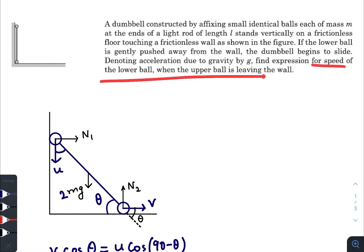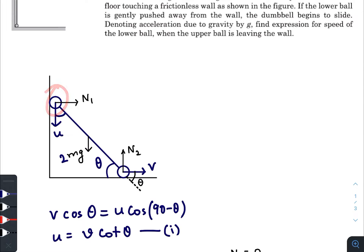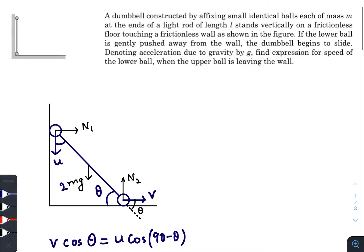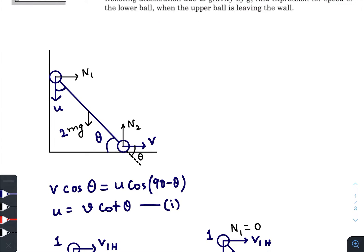We need to find the speed of the lower ball when the upper ball just leaves the wall. Until it leaves the wall, I have drawn the situation and the free body diagram of the structure. The forces acting are: normal force due to the wall, gravitational force, and normal force due to the floor. At this instant, the rod makes an angle theta with the horizontal.